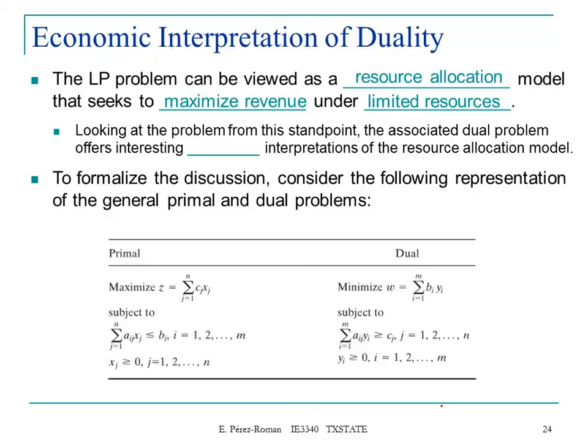We are trying to assign resources to maximize our revenue, but we always have some capacity limitations. If we didn't have any limitations, you could assign as many resources as possible to get as much production as you need. But that's not the case, because you always have some limitations in terms of money. You can only hire this many people, and those people will give you certain production. You need to find the best way to use those resources. Looking at the problem from this standpoint, the associated dual problem offers interesting economic interpretation of the resource allocation model.